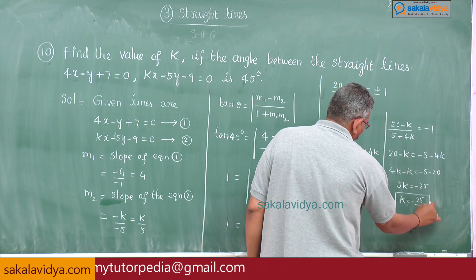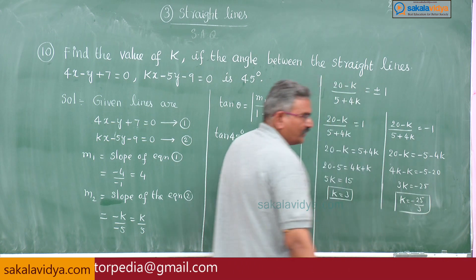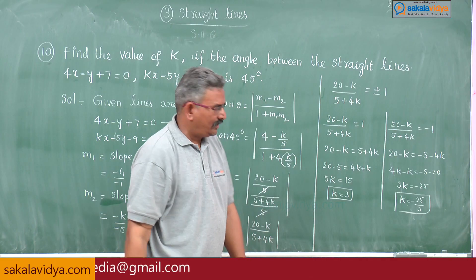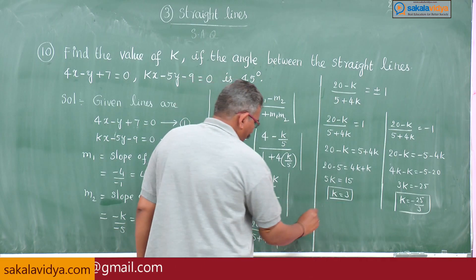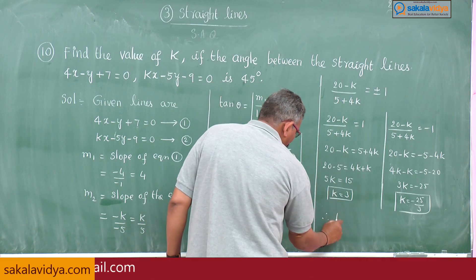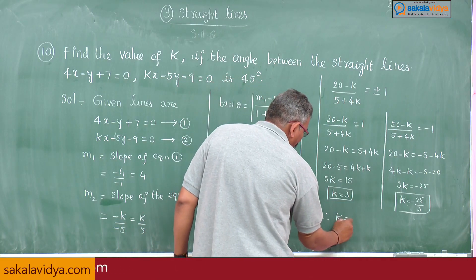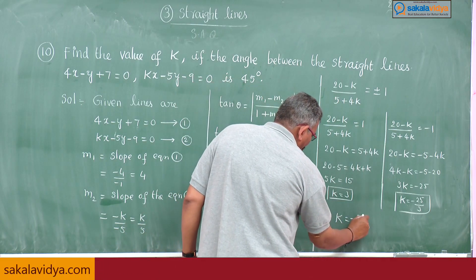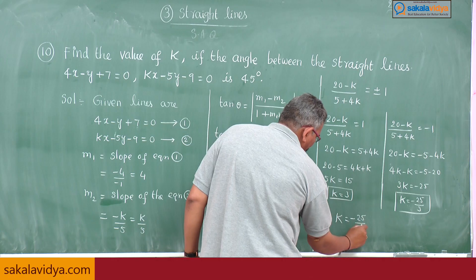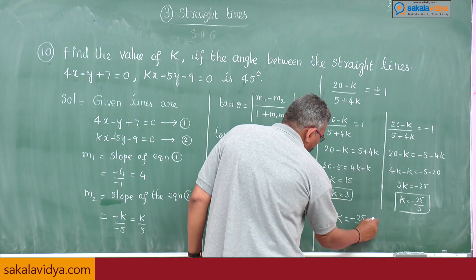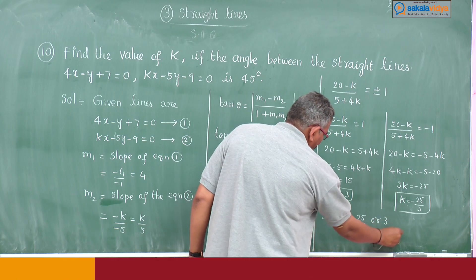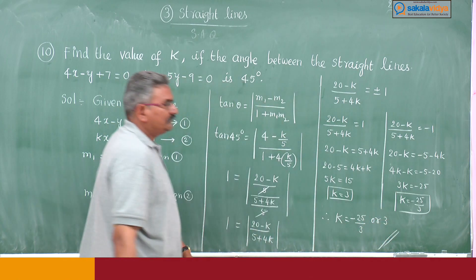There are two possible values. Therefore k is equal to 3 or minus 25 over 3. This is the answer.